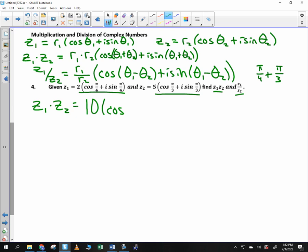So I get 10 times the cosine of pi over 4 plus pi over 3. Good. So you see 45 and 60. We're going to leave it in radians. So we're going to create common denominators. So 3 pi over 12 plus 4 pi over 12. 7 pi over 12. That's all.